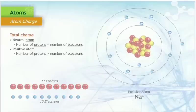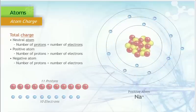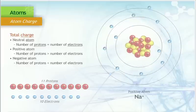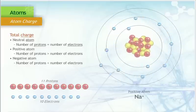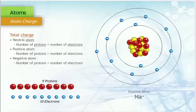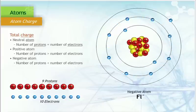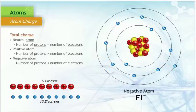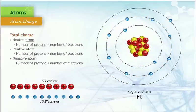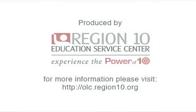On the other hand, a negative atom happens when there are more electrons than protons. There are more negative charges than positive charges, and therefore the atom has a negative charge. For instance, fluorine has 9 protons and 10 electrons. There is one more negative charge than positive charge, giving the atom a negative charge. This is expressed by adding a minus sign superscript to the element symbol.